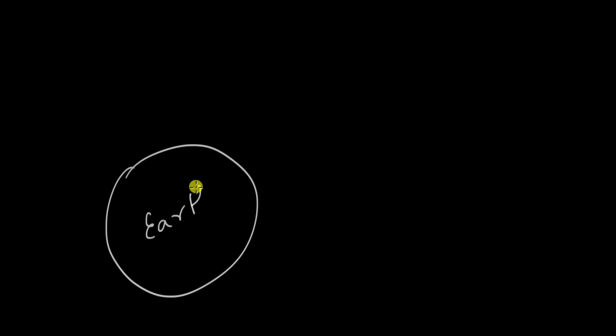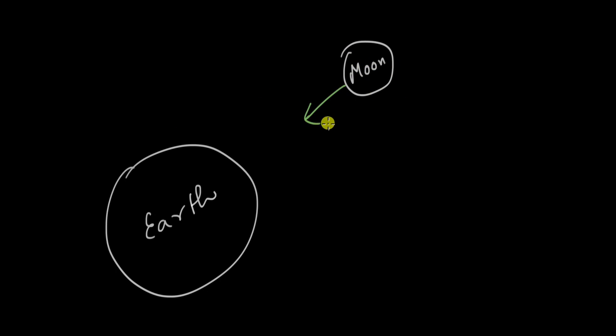When I was in class 11th, one of my friends asked me this question. We have the earth, which is a huge ball, and we have a moon, which is a smaller ball, and the earth attracts the moon. Why then does the moon not fall into the earth?